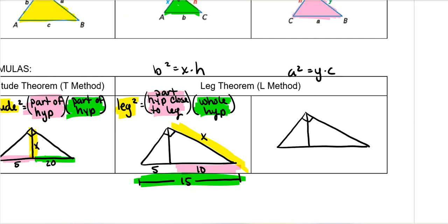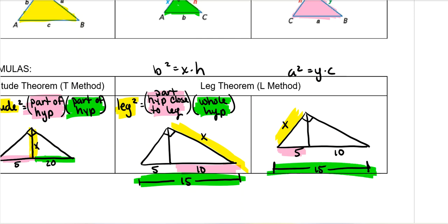You can also use the other leg. So if we're looking for the other leg with the same scenario — 5, 10, and 15 — that leg squared is equal to the part of the hypotenuse closest to it times the entire hypotenuse. It has to be the part closest to the leg.